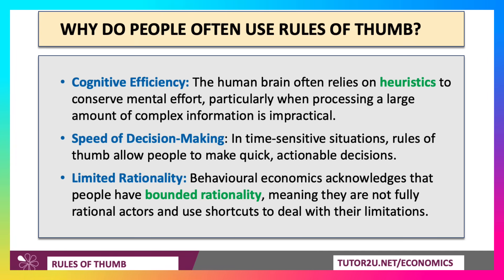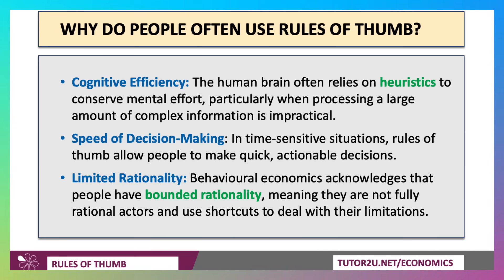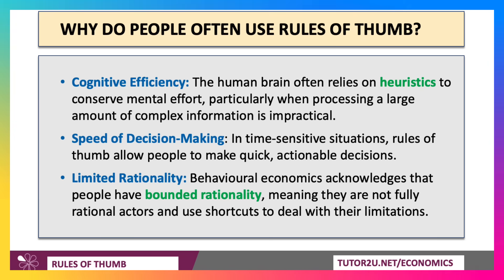So why do people often use rules of thumb? Well, it's partly that the human brain just relies, or comes to rely, on heuristics — which is another word for rules of thumb — to conserve our mental effort, because making calculations and weighing everything up uses up scarce cognitive energy and bandwidth, particularly when processing a large amount of complex information.